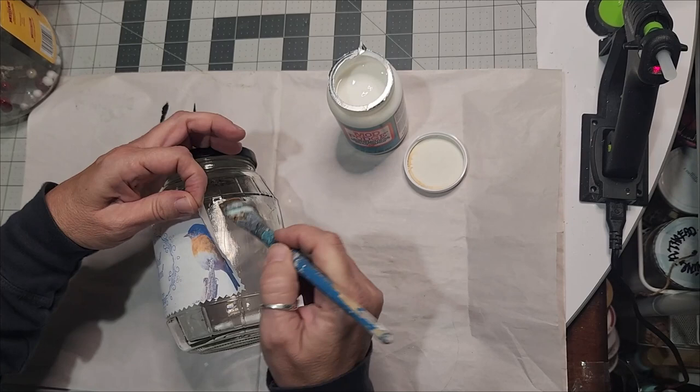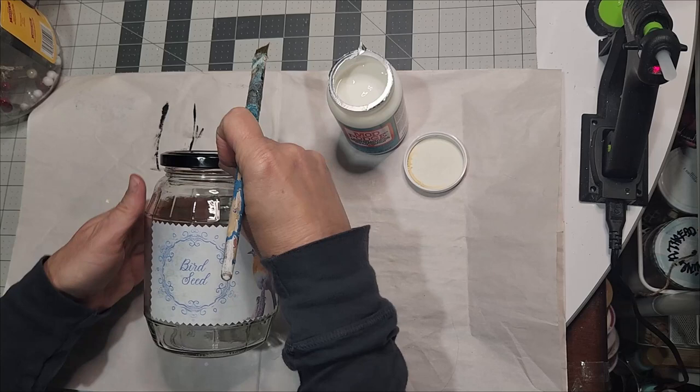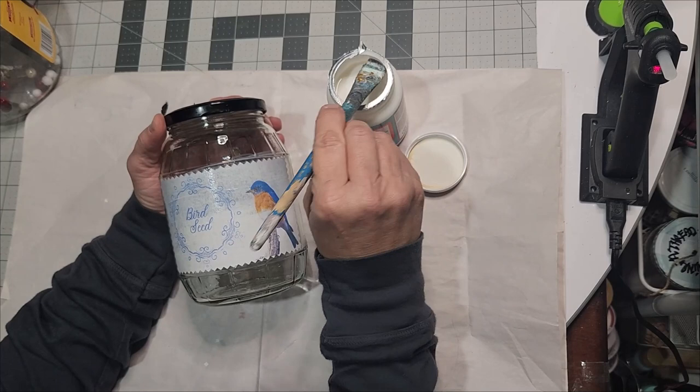As you can see, I put a modest amount on the label and the glass. You want to make sure that the underneath is Mod Podged before laying down your label. Then you want to pat it with your brush, put a very thin coat, modest amount, over the label itself.